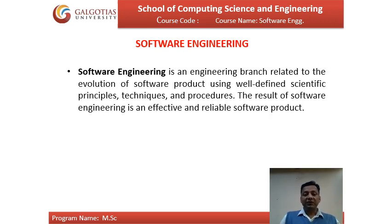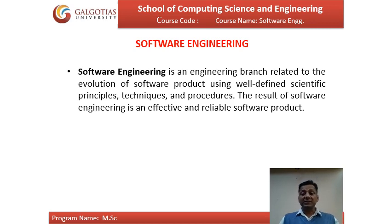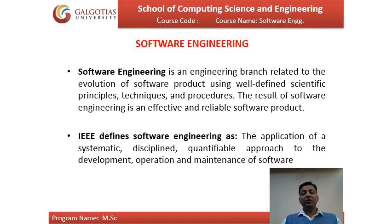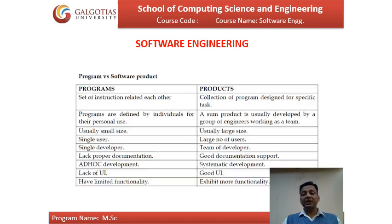Another definition: software engineering is an engineering branch related to the evolution of software products using well-defined scientific principles, techniques, and processes. The result is an effective and reliable software product. According to IEEE, software engineering is defined as the application of a systematic, disciplined, quantifiable approach to the development, operation, and maintenance of software.